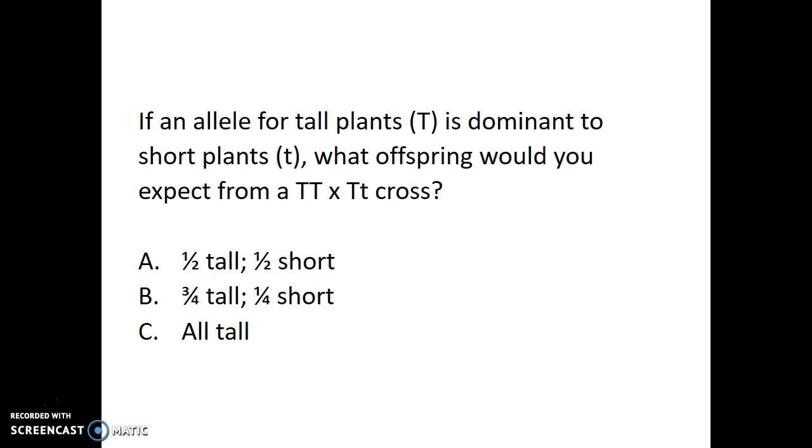Here are a few questions for you to think about. You can use a Punnett square to answer the question, or you might be able to answer it without using the Punnett square. If an allele for tall plants, capital T, is dominant to short plants, little t, what offspring would you expect from a cross between a parent who is TT crossed with Tt? Would you expect half tall and half short? Would you expect three quarters tall and one quarter short? Or would you expect all of them to be tall?